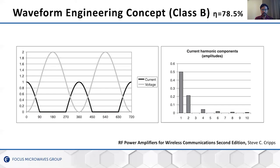Class B is the most popular class used in advanced modulation architectures. In Class B bias, the current waveform is a half-sinusoid, meaning it has even harmonics but no odd harmonics. The voltage remains a sinusoid across Class A, AB, and B — only the current changes, with the conduction angle changing and thus changing the overlap. The maximum theoretical efficiency in Class B is 78.5%.